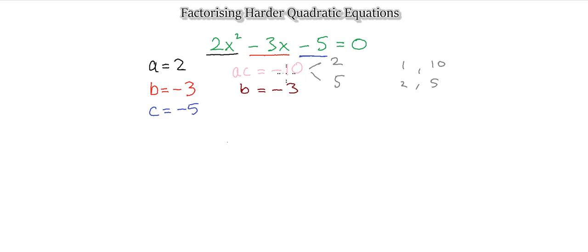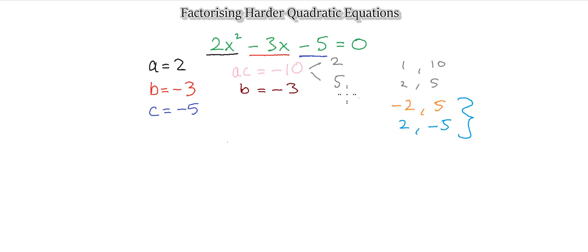Now we just have to look at the signs. We know multiplying gives negative 10, so one of the numbers must be negative. So either minus 2 and 5, or 2 and minus 5. Minus 2 plus 5 gives positive 3, but we need negative 3. Therefore it's 2 and minus 5, because 2 plus minus 5 gives minus 3, and 2 multiplied by negative 5 gives negative 10. So it's positive 2 and negative 5.